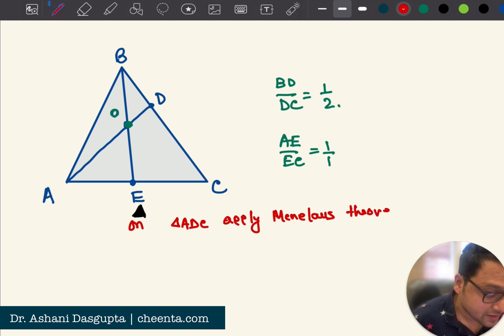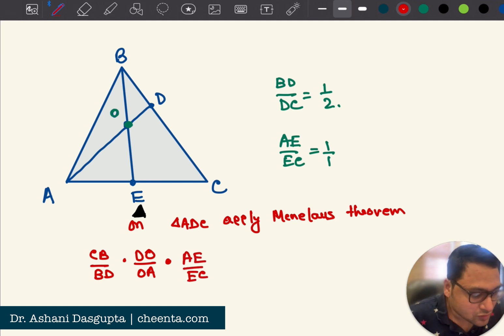So if you don't know Menelaus theorem, you can look it up in some textbook of geometry. So what does it say? It says that CB is to BD, CB is to BD times DO is to OA times AE is to EC is equal to one or minus one. But we